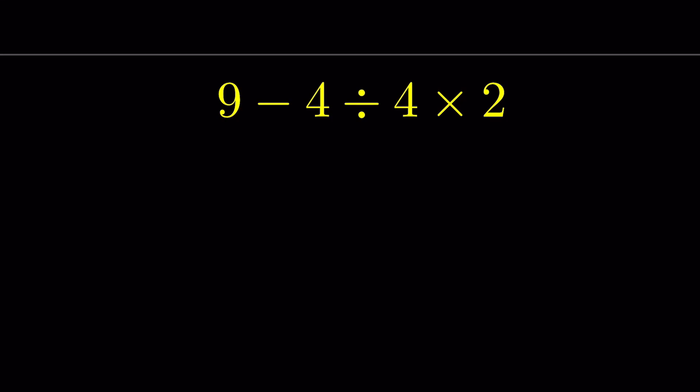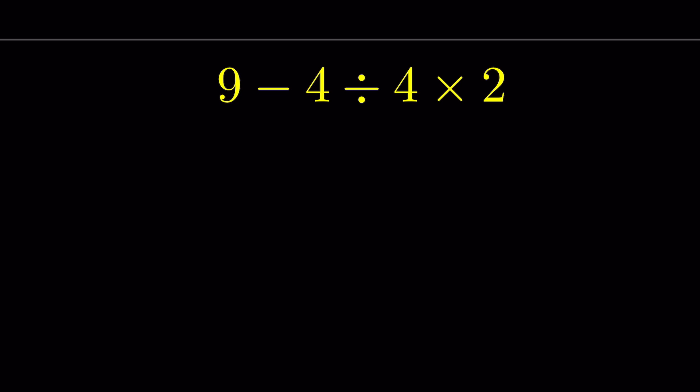9 minus 4 divided by 4 times 2. How do you solve this? As per order of operations, if you follow the rule of PEMDAS,